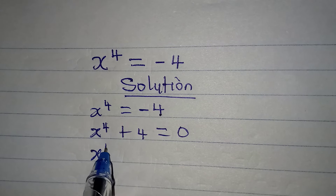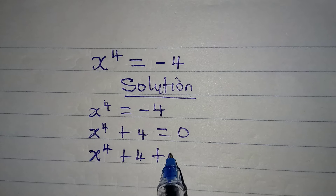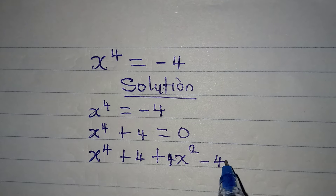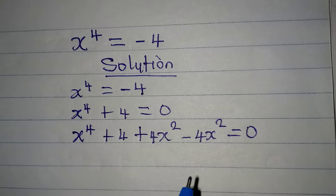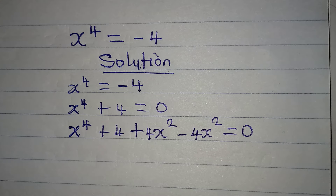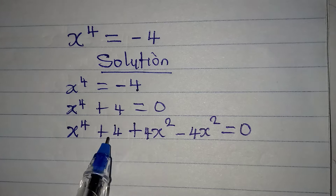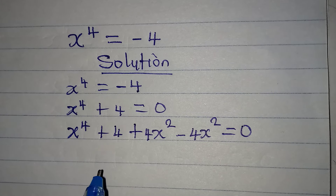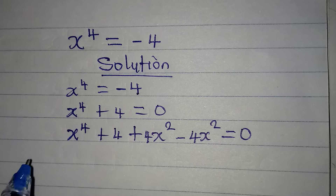I'm going to have x to the power of 4 plus 4 plus 4x squared minus 4x squared, which equals zero. Now 4x squared minus 4x squared will still give us zero, so we have not changed the real equation.